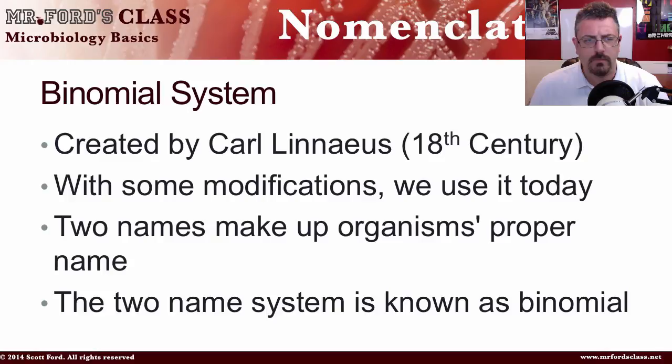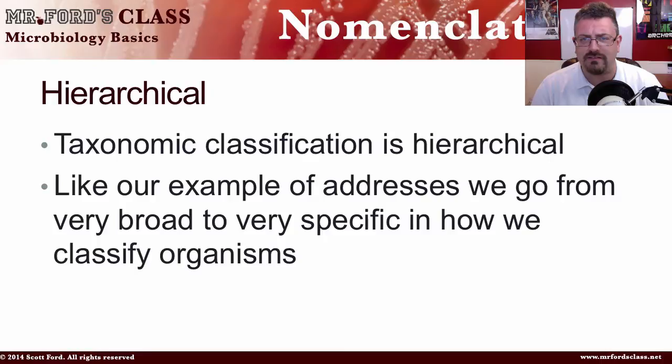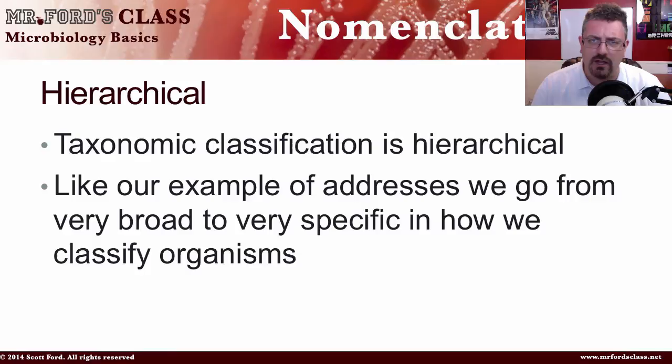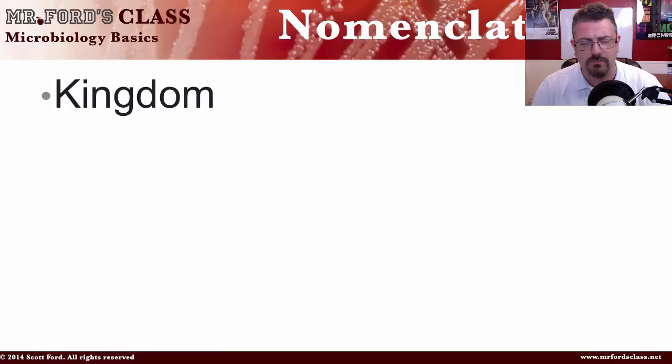Of course, 'bi' means two — if you have a bicycle, you have two wheels. So binomial means two names. The way we classify things is a hierarchy: we drill down and get more and more specific as we go further down specific branches. You might be familiar with the levels of our classification: we have kingdom, phylum, class, order, family, genus, species.